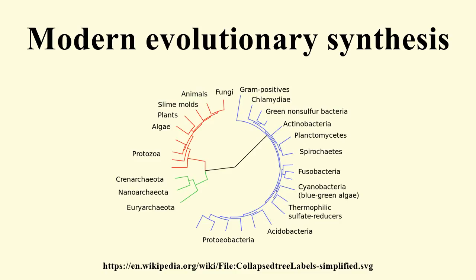E. B. Ford was an experimental naturalist who wanted to test natural selection in nature. He virtually invented the field of research known as ecological genetics. His work on natural selection in wild populations of butterflies and moths was the first to show that predictions made by R. A. Fisher were correct. He was the first to describe and define genetic polymorphism, and to predict that human blood group polymorphisms might be maintained in the population by providing some protection against disease.